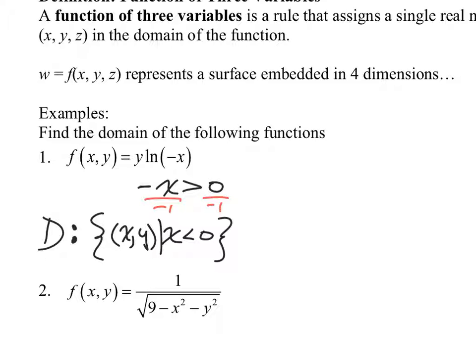Domain is like the x value in single variable functions, but now we're working with functions of two variables, so the domain will be all possible values of x or y — but the most restrictive of both. Now z is going to be our range, because z is in terms of x and y. So our domain is twofold now. If I were working with a function of three variables — w equals f(x, y, z) — then x, y, and z would make up my domain, but w makes up my range.